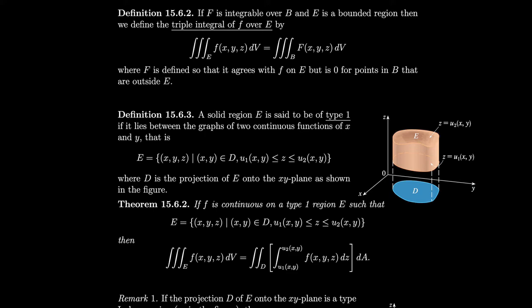When we convert dV into dx, dy, and dz, those are 3 different possible differentials, giving 6 different orderings. Three of those ways correspond to projecting into 3 different planes. After projecting into a plane, the resulting plane region can be type I or type II as we saw with double integrals. So: 3 different planes to project into, times 2 types for each plane, gives 6 total orderings.